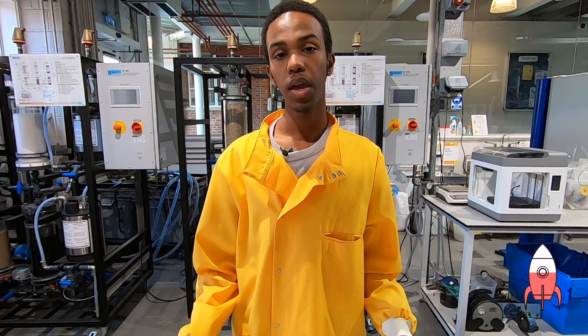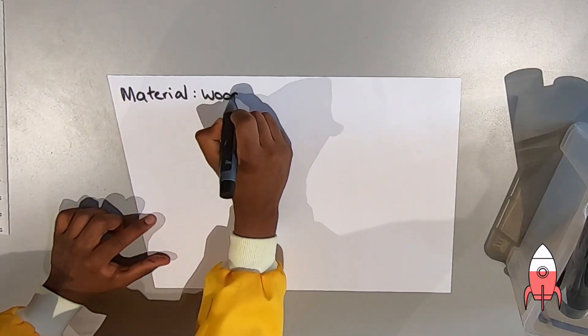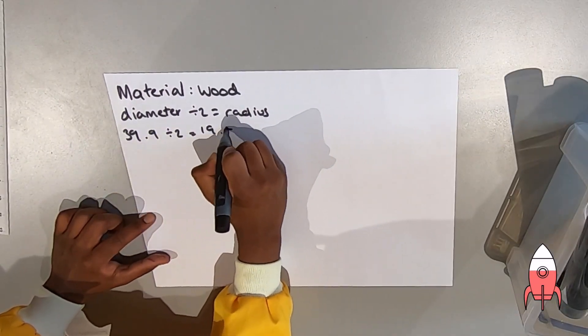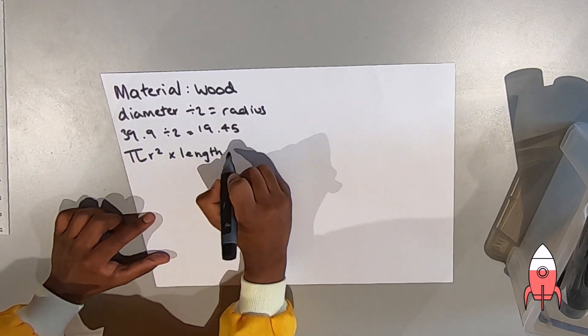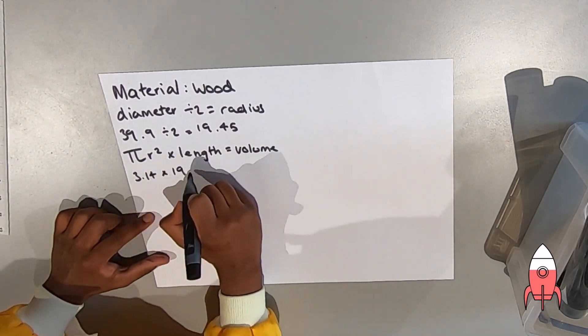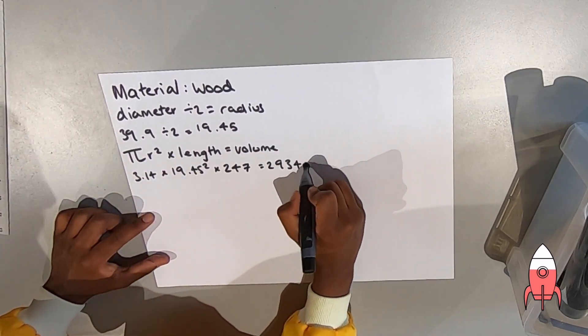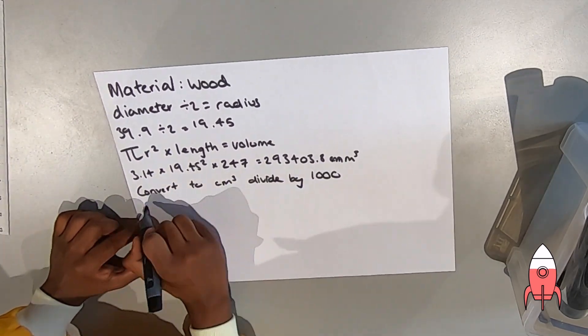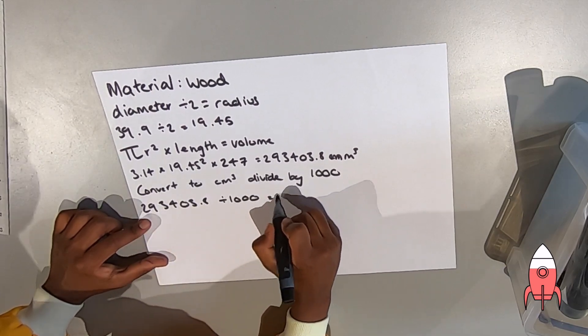Once we have these values, we will use this simple calculation to find our final volume. We can do this by multiplying pi by the radius squared, and then multiplying all of this by the length.